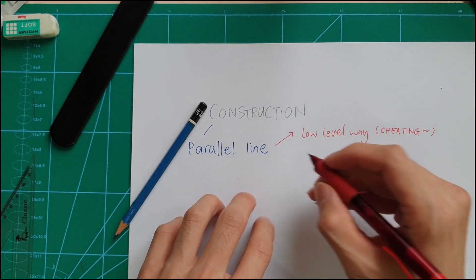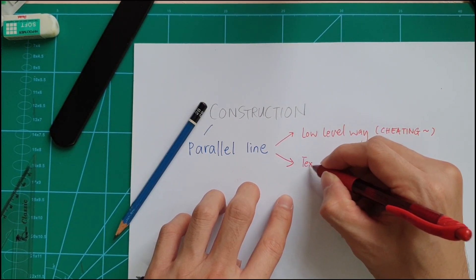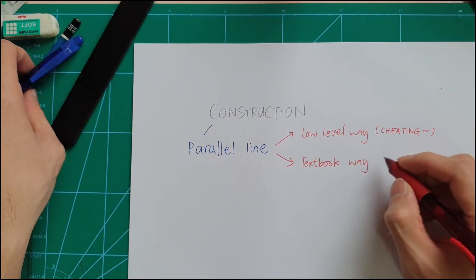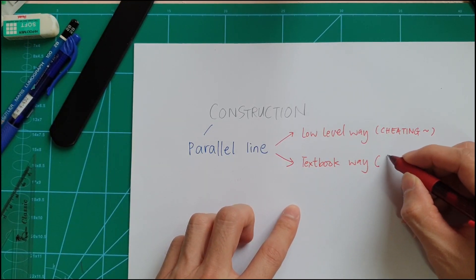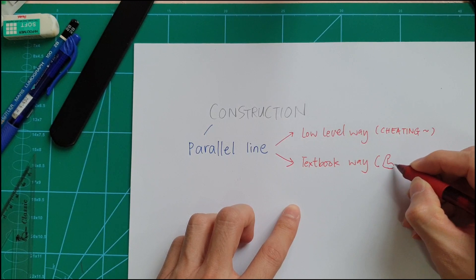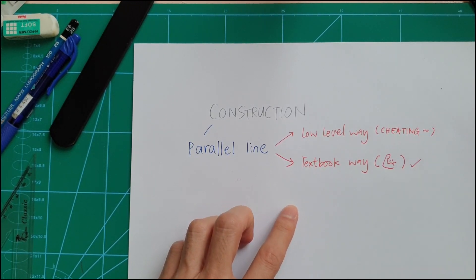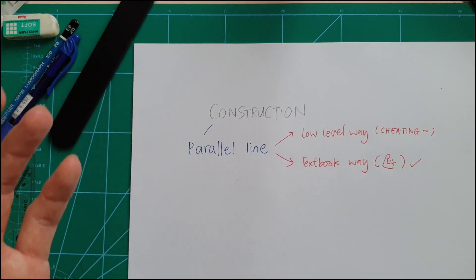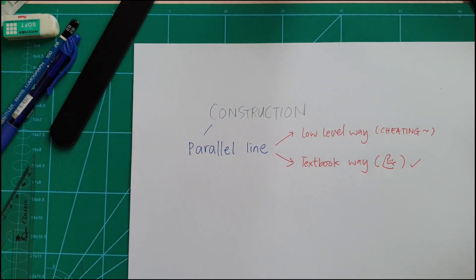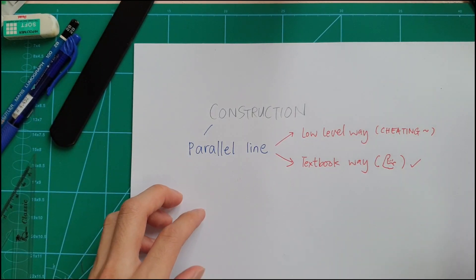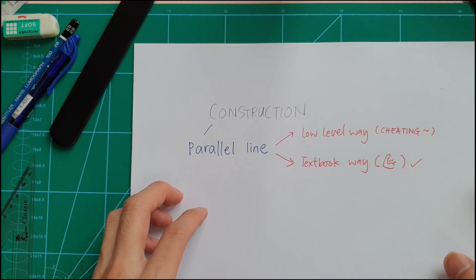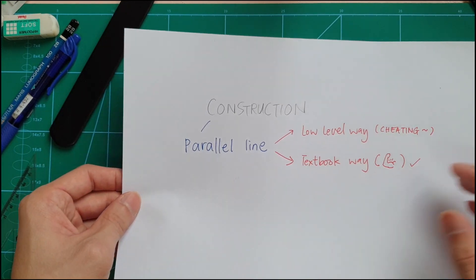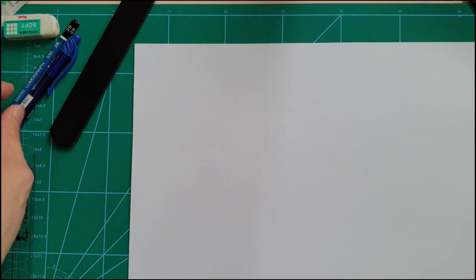Then the second way, we can use the textbook way, which is the strongly recommended one. This applies not only in Form 1 lines and angles topic, but also in Form 3 locus chapter as well. So let's do it — let me design a question for you to look at.